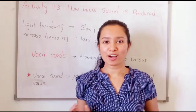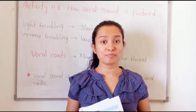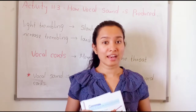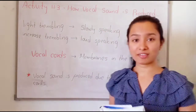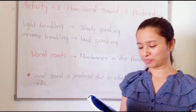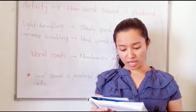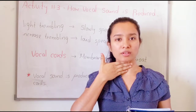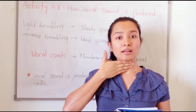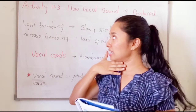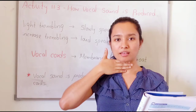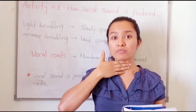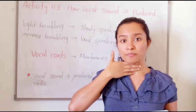Now we are going to see how vocal sound is produced. Do you know how vocal sound is produced? Let's do activity 11.3, page number 2. Here you have to place your fingers in the middle of your throat. Then speak slowly — you can sing a song slowly. Then record what you feel in your fingers.